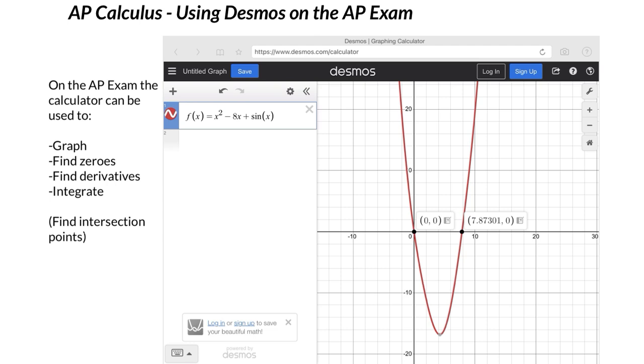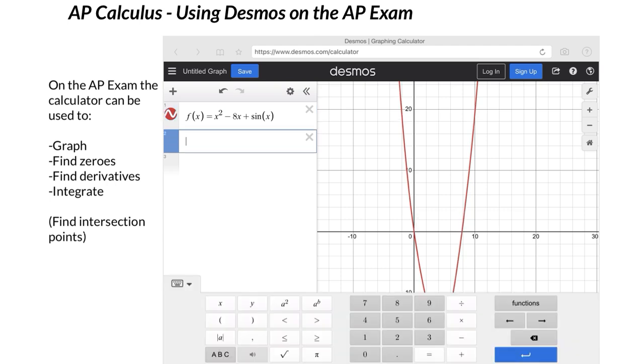Let's say we wanted to find the value of the derivative. Let's say we wanted to know what the derivative was at, let's just say 6. If we write f prime and then use our parentheses 6, you can see it has just figured out for us it's 4.96017. It's just that easy to find the value of the derivative.